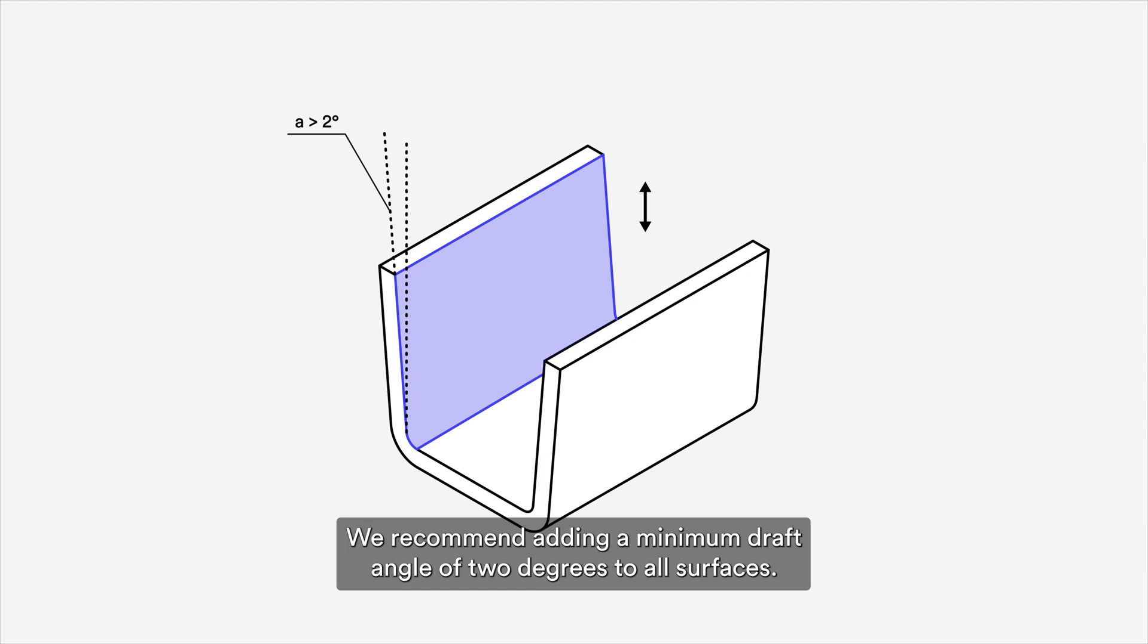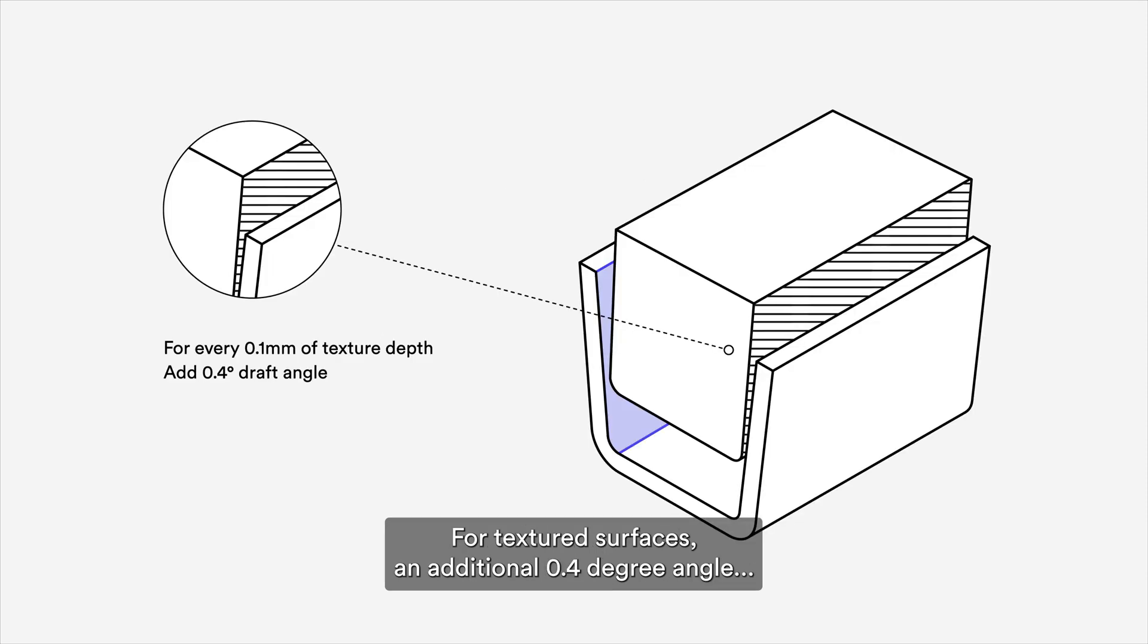We recommend adding a minimum draft angle of 2 degrees to all surfaces. For textured surfaces, an additional 0.4 degree angle for every 0.1 millimeter of textured depth is optimal.